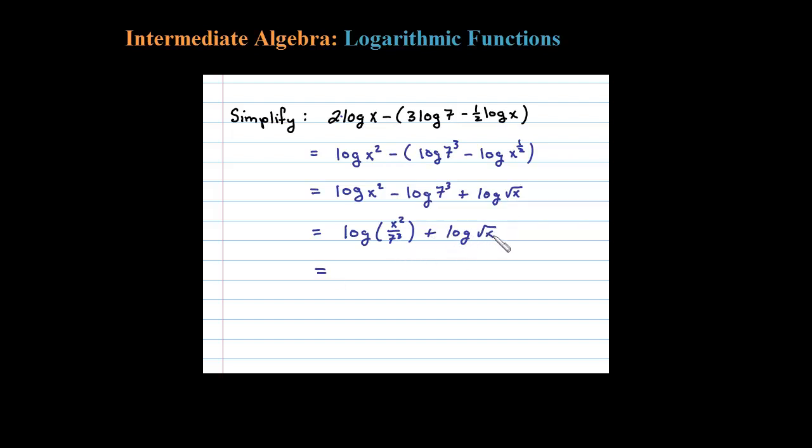And then finally addition we can multiply those arguments. So that would be equal to log of x squared divided by 7 to the third times the square root of x.